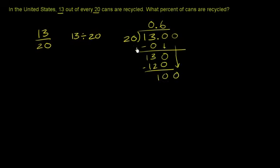Let's bring down another 0. 20 goes into 100 5 times. 5 times 20 is 100. And we are done. So this written as a decimal is 0.65.